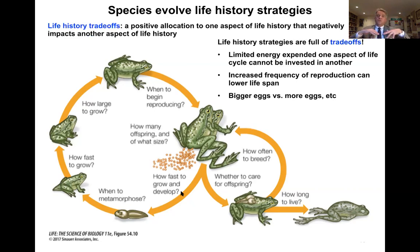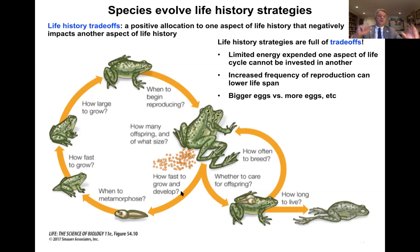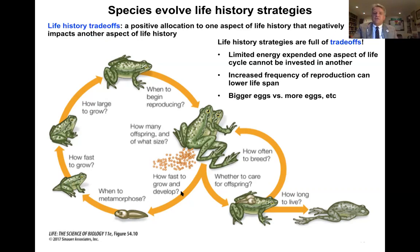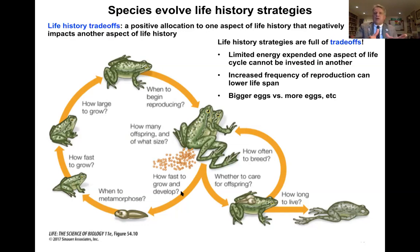When it comes to life history strategies, there are always life history trade-offs — a positive allocation to one aspect of a life history negatively impacts another. These trade-offs might involve limited energy: energy spent on one aspect of a life cycle cannot be invested in another. For example, increased frequency of reproduction can lower lifespan; bigger eggs versus fewer eggs; more eggs versus smaller eggs. Trade-offs like this occur throughout life history strategies.